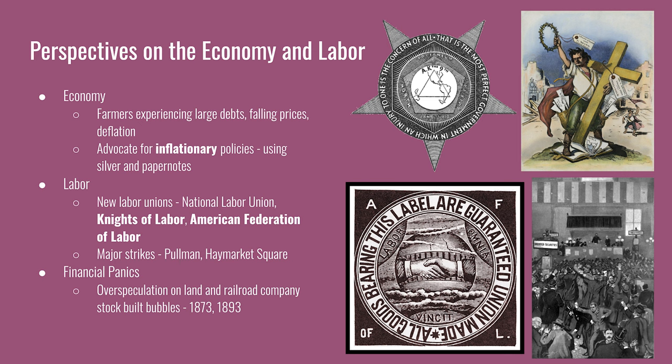The AFL is a federation of labor unions, meaning it's not individuals who join but various labor unions that join this larger federation. For financial panics, there are two really big ones in 1873 and 1893. These panics were caused by over-speculation on land and railroad company stocks. As people believed the value of these would endlessly go up, they created bubbles, and when the bubbles burst, people lost on their investments, which negatively affected the economy.